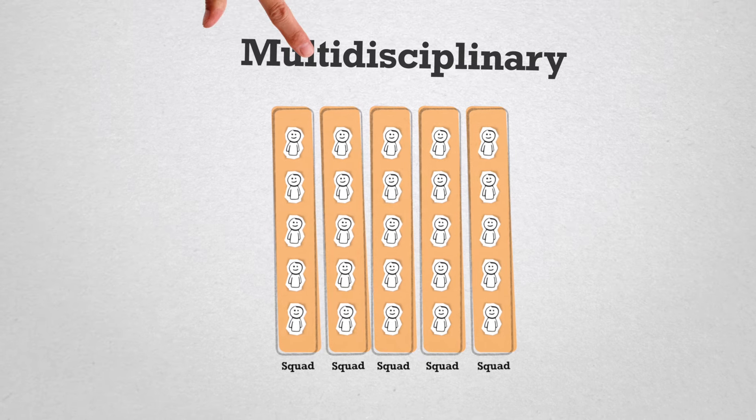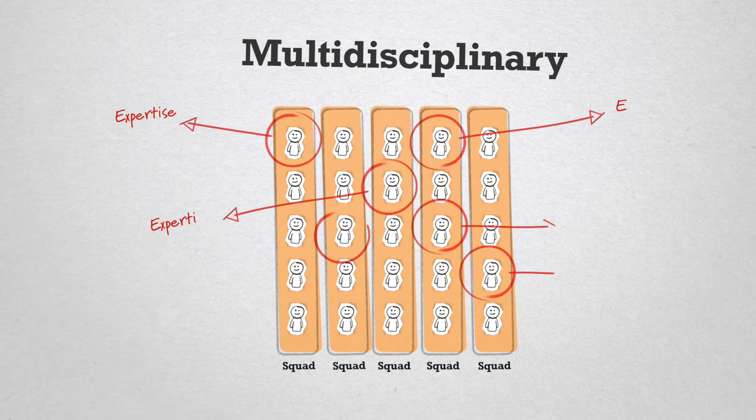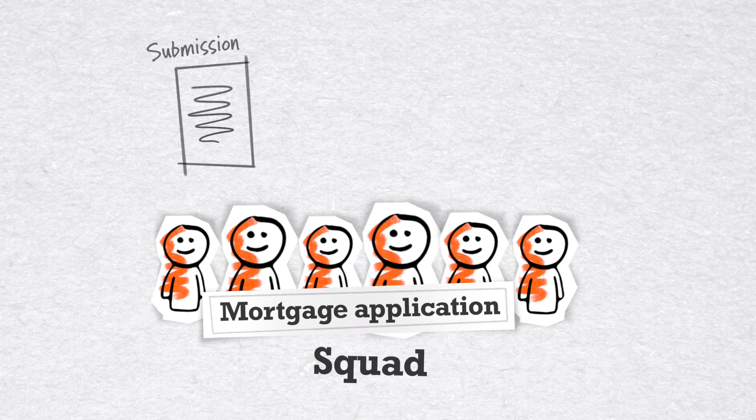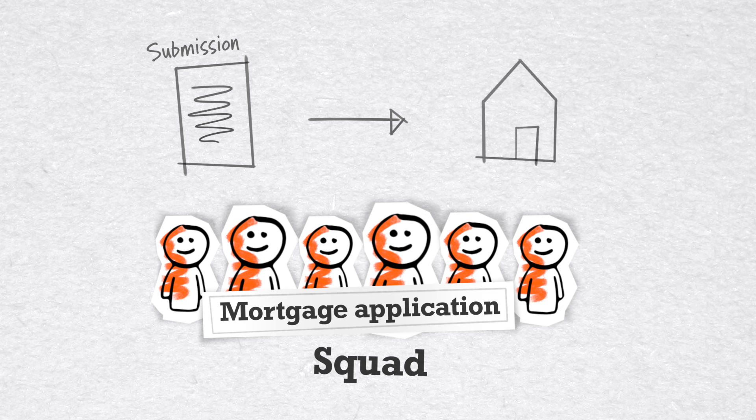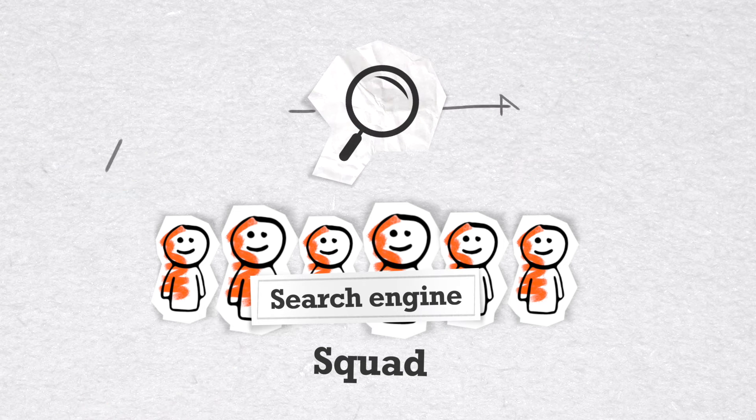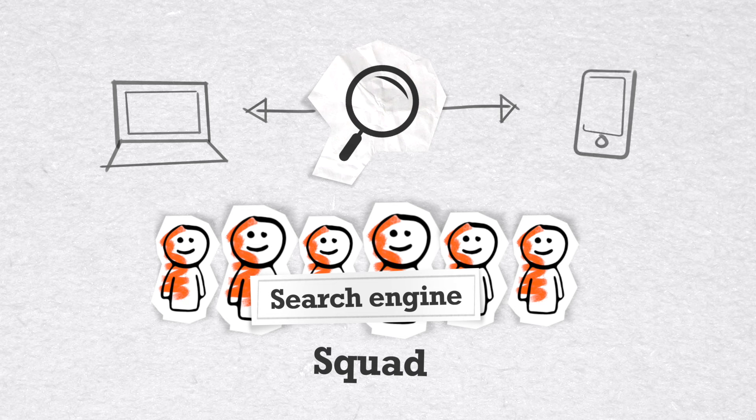Squads are built around different disciplines, different areas of expertise, and different backgrounds. For example, the squad mortgage application concerns itself with developing and implementing the most customer-friendly and efficient way of moving from first mortgage submission to final approval. And the squad search engine is dedicated to developing the most customer-friendly and effective search engine for our various digital channels.